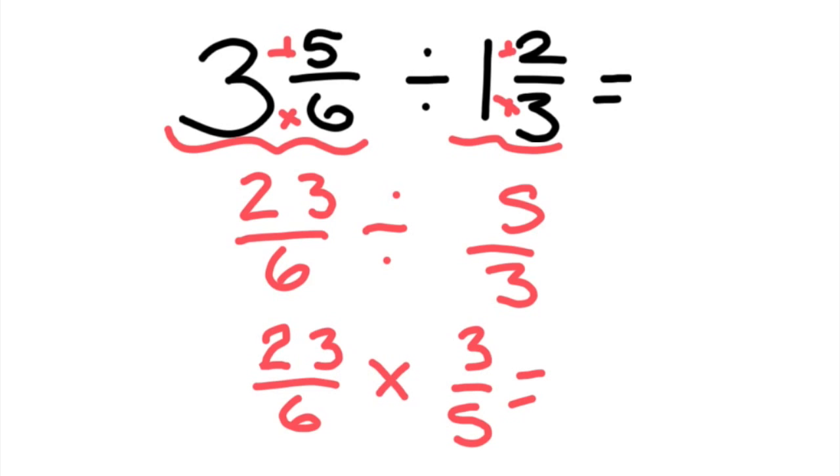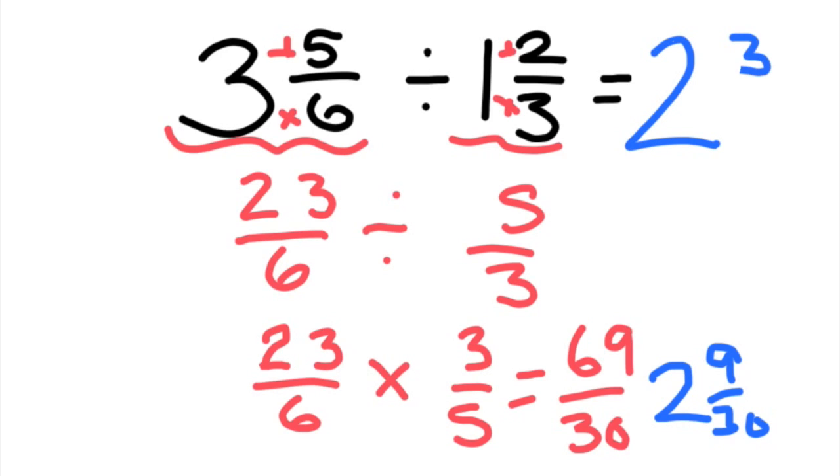So then what we have here is 69 over 30, which is improper. So you can say that 30 goes into 69 twice, with a remainder of 9 30ths. It's still not simplified because 9 and 30 have a GCF of 3. So the final answer is going to be 2 and 3 tenths.